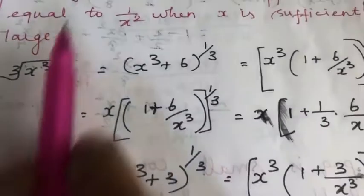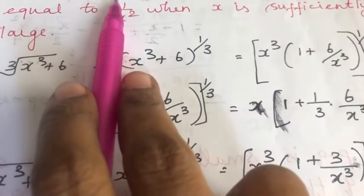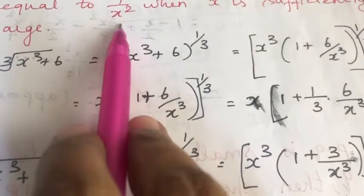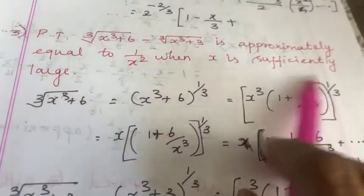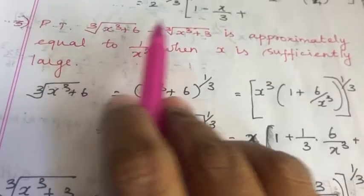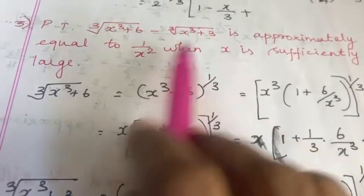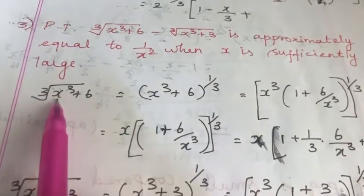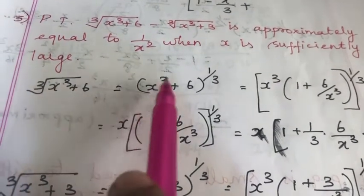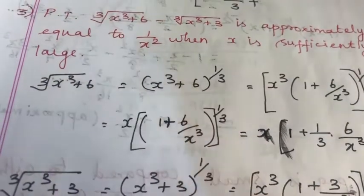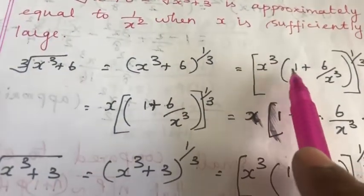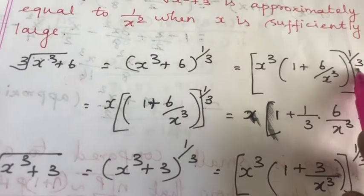Third problem: Prove that ∛(x³ + 6) − ∛(x³ + 3) is approximately equal to 1/x² when x is sufficiently large. We need to find the subtraction of these two expressions. So let us take the first one: ∛(x³ + 6), that is (x³ + 6)^(1/3). If we take x³ outside: x³ · (1 + 6/x³)^(1/3).